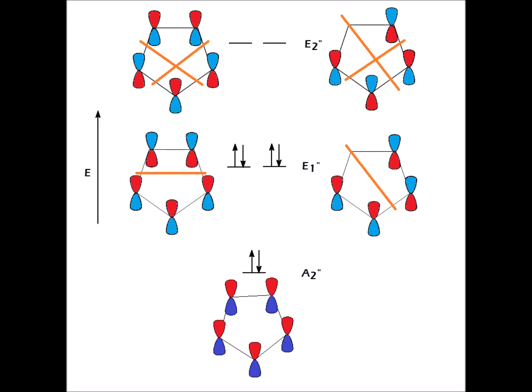We construct an energy diagram showing the pi molecular orbitals using the principle that more nodes means higher energy. A2 double prime has no nodes, so it is lowest in energy. The doubly degenerate E1 double prime has one molecular node, so it is next in energy. The E2 double prime has two nodes, so it is highest in energy. As a neutral species cyclopentadiene has five pi electrons; as the anion it has six. This satisfies the Hückel 4n+2 rule, completely filling the A2 double prime and E1 double prime levels, thereby accounting for the aromatic stability of cyclopentadienyl anion. Thank you very much for your attention.